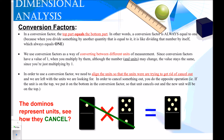In a conversion factor, the top part equals the bottom part. A conversion factor is always equal to one, because when you divide something by another quantity that it's equal to, it's like dividing that number by itself, which equals one. We use conversion factors as a way of converting between different units of measurement. Since conversion factors have a value of one, when you multiply by them, although the number and the units may change, the value stays the same.